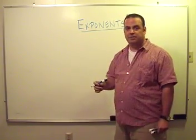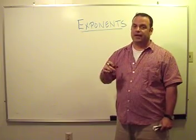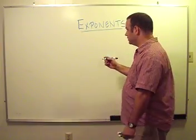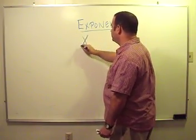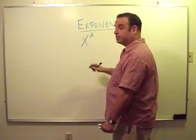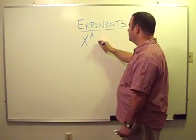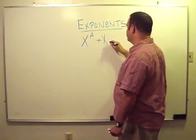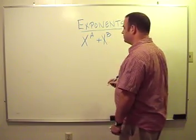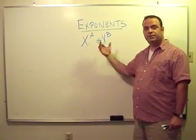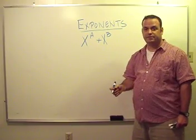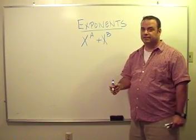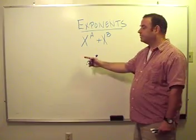I'm going to talk about exponents in general and the use of algebraic exponents. Let's start off with the variable x raised to the power a, the exponent a, plus the variable x raised to the exponent b. The solution to this set is x to the a plus x to the b. I can't combine them,